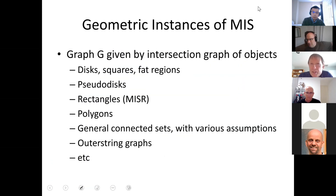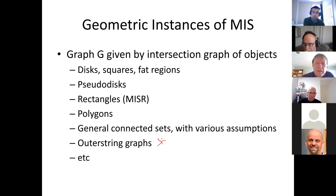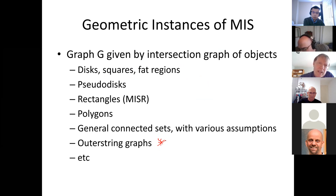The talk focuses on geometric instances of maximum independent set, where the underlying graph comes from the intersection graph of geometric objects like disks, squares, rectangles, fat regions, pseudodisks, and polygons. Essentially all of these are hard as well. One exception is outer string graphs, where even weighted maximum independent set is polynomial time, but the others are all at least NP-hard.